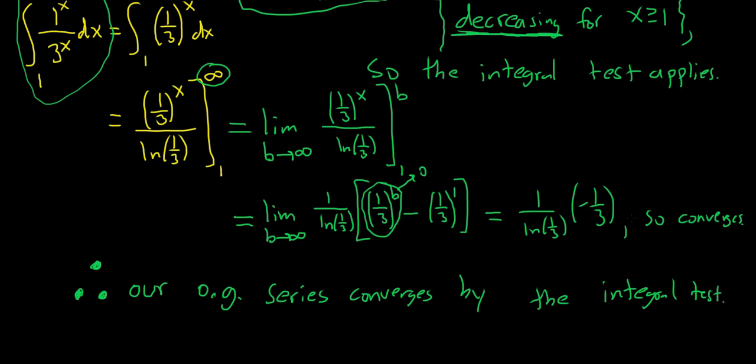It's extremely important to note that this is not the value of the sum. This is just the value of the integral. It's a common misunderstanding. If we had gotten something that wasn't a number here, like infinity or negative infinity or DNE, then we would get divergence.